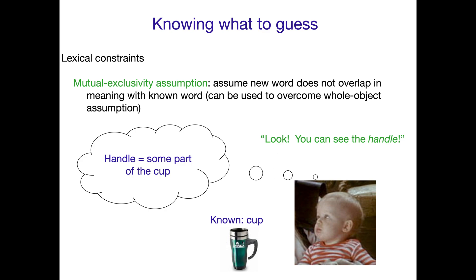Let's say a child knows that this is a cup, and someone says, 'Look, you can see the handle.' They think: they can't be talking about this whole object. One of the first assumptions children might make is that a new word refers to the whole object. But if they know the whole object is called a cup, and especially if their attention is drawn to a little part of it, they might realize 'handle' refers to this part of the object rather than the whole object.